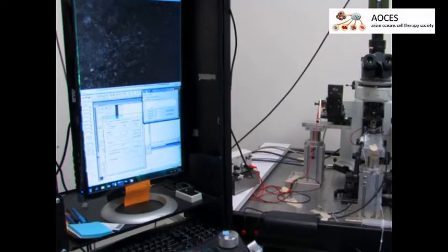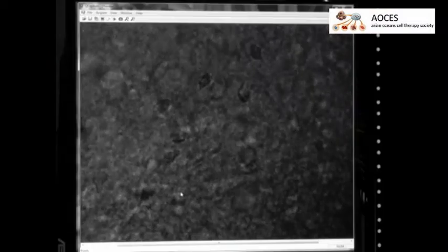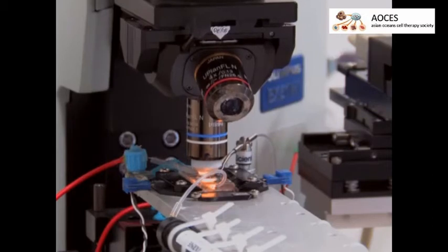Now, look for a target cell. Mark it on the computer screen in order to help guide the recording micropipette. Raise the objective lens to allow sufficient space for the placement of the recording micropipette.